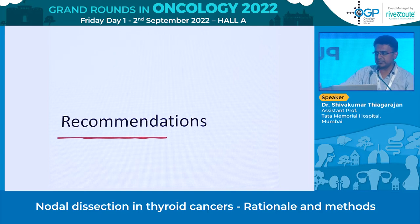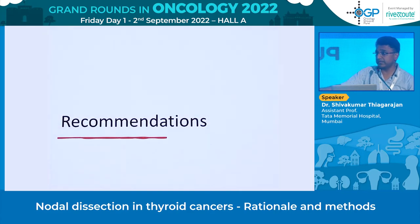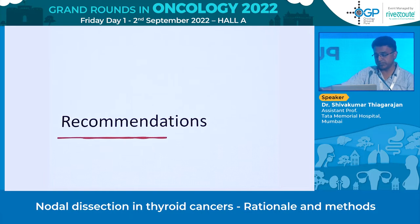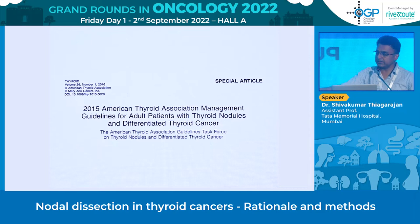Regarding recommendations for nodal dissection in thyroid cancers: at conferences, central compartment dissection is always controversial. The latest American Thyroid Association guidelines say 'less is more' for thyroid cancer, meaning nodal dissection should be done only when necessary, because these patients have good survival and we want to minimize morbidity. The ATA guidelines, last updated in 2015, are generally followed; the 2020 update was delayed due to COVID and can be expected sometime soon.